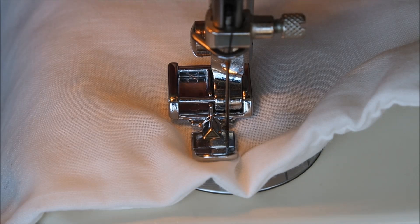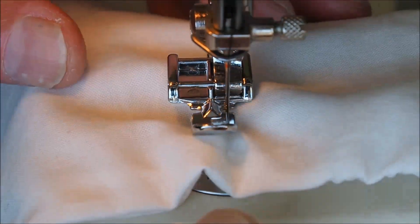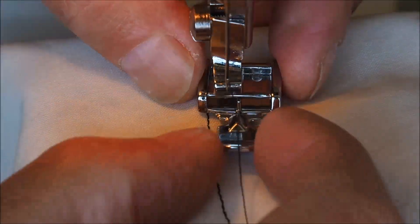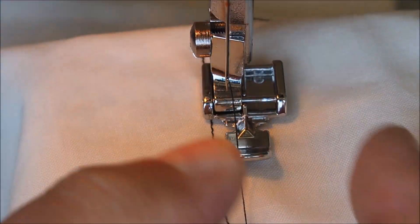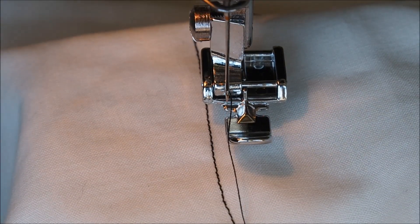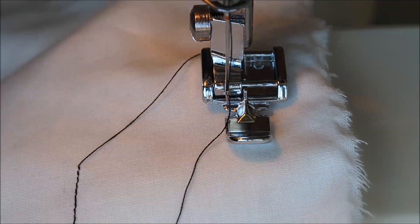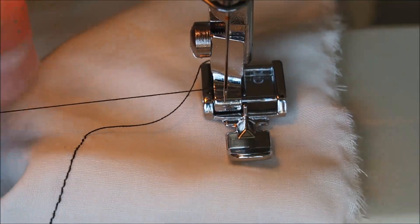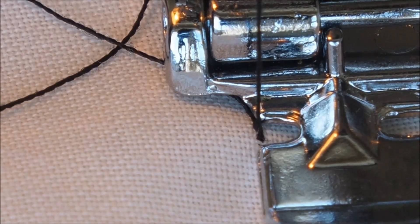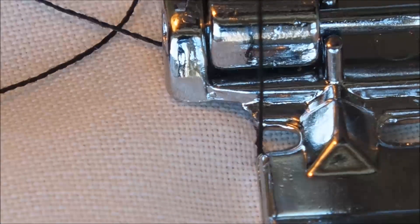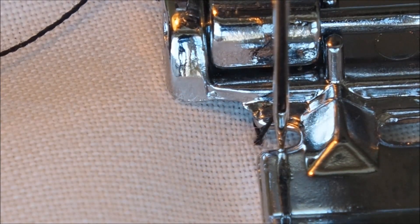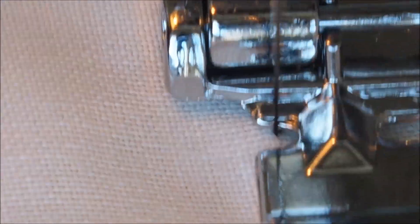And if we want to use the zip foot on the other side, just unclip, move it across, pick it back up again. And just double check that there's going to be no collision there again. And that looks all good. And away we go on the left side there. You can see it's not quite lined up. And so you can use your needle positioner to bring it across, just one notch there. And away we go.